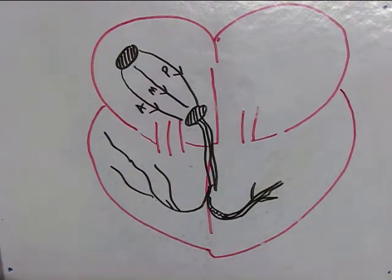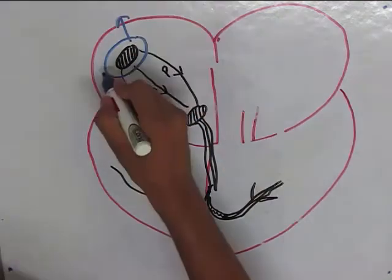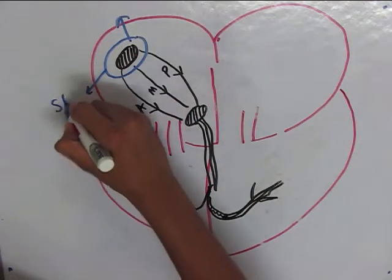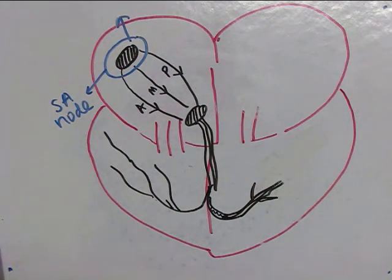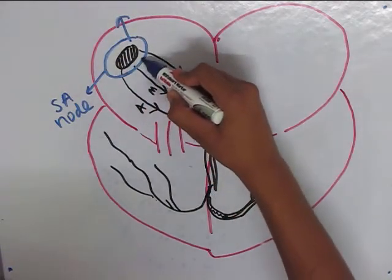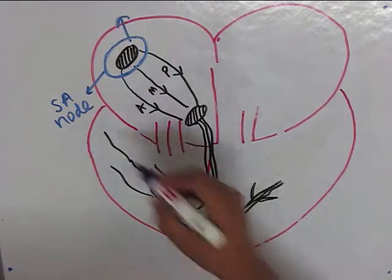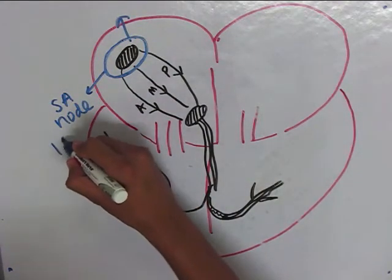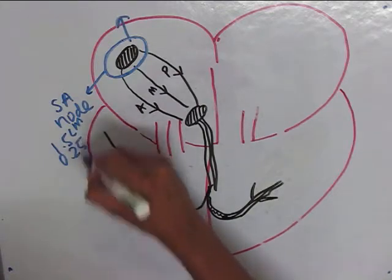Now let's talk about the conducting system of the heart. As we know, the primary pacemaker is the SA node, which is called the primary pacemaker. The SA node is situated at the upper right corner of the right atrium near the opening of superior vena cava. It is about 1.5 centimeter long and 0.25 centimeter wide.